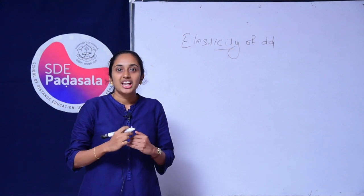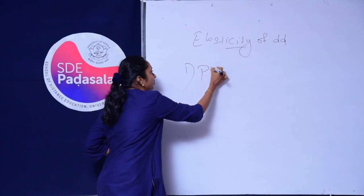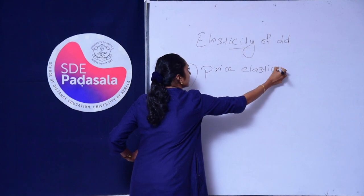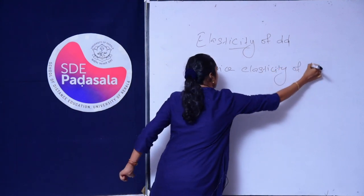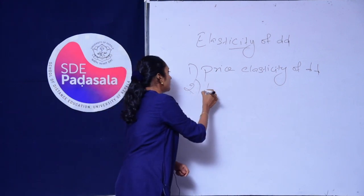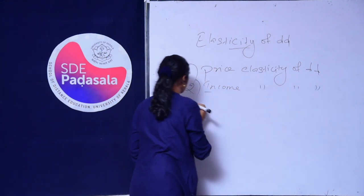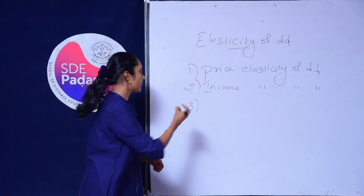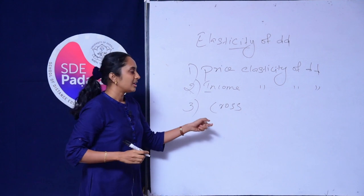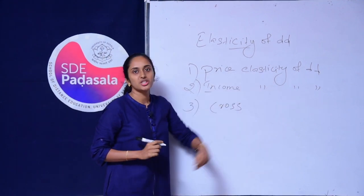Accordingly, we can classify Elasticity of Demand into three types: Price Elasticity of Demand, Income Elasticity of Demand, and Cross Elasticity of Demand. I will be explaining all three but will be mainly focusing on Price Elasticity of Demand, which I think is the most important one among them.